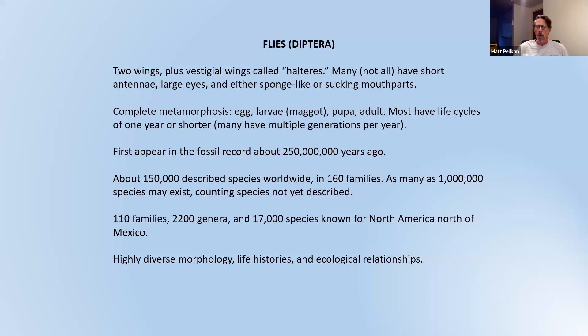It's a very diverse group. Estimates go up to as many as a million species of flies in the world, most of which are not yet described. There are many situations where what we currently think of as one species would, if examined carefully, turn out to be eight or ten hidden species. There are 110 families, 2,200 genera, and 17,000 known species for North America. On the vineyard, I've documented about 40 families and 200 to 250 species.